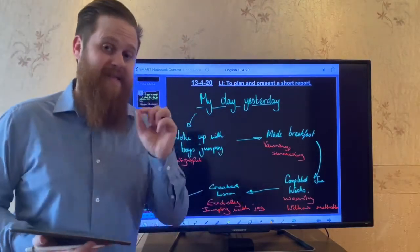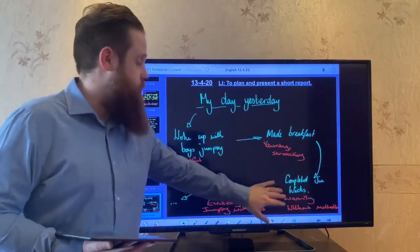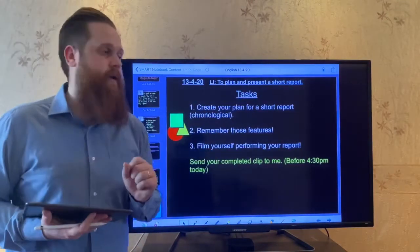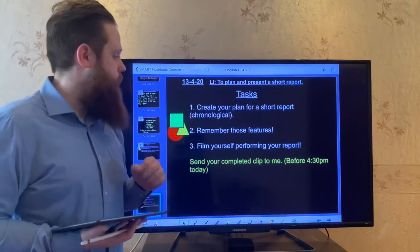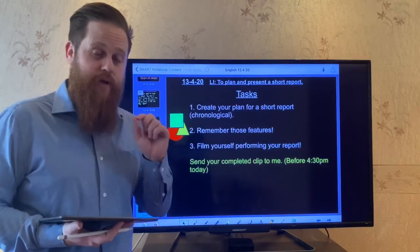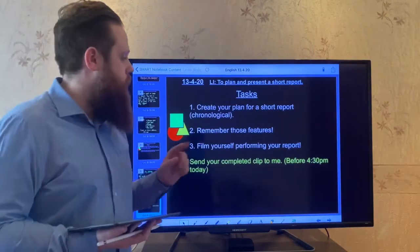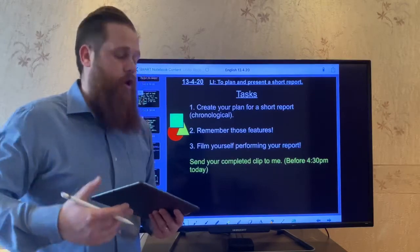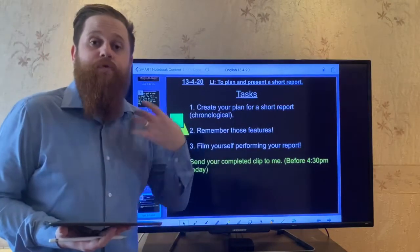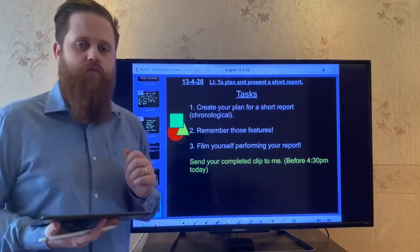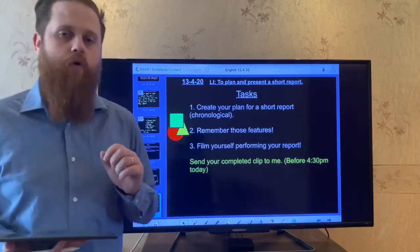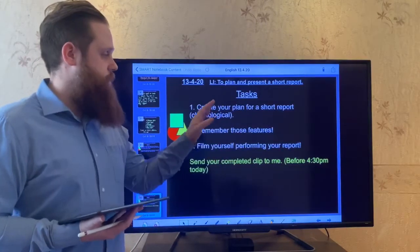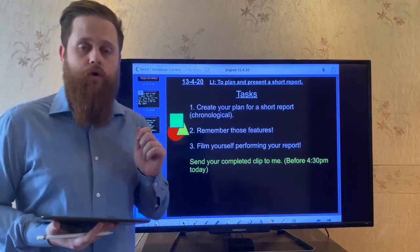So plan out your report first. You can do a little map like this. Remember, time order. It's a chronological report. So plan what you did. You could use some keywords there if you want to. And then you'll be recording it. So, your tasks for English year six. Number one. Create a plan for a short report. Remember, it's a chronological time order. Number two. Remember those features that we talked about. Make sure that you include those features or the ones that you can do in a spoken report. I will send this file to you on Skype so you've got it. And number three. I would like you to film yourself or get mom and dad or whoever else is at home to film you, sort of performing your report. I want to have the completed reports, completed videos sent to me before 4.30pm today. And I'll give you some feedback about the good things that you had in your spoken report. So this is your task for today. Plan. Remember those features. And then film your chronological reports.